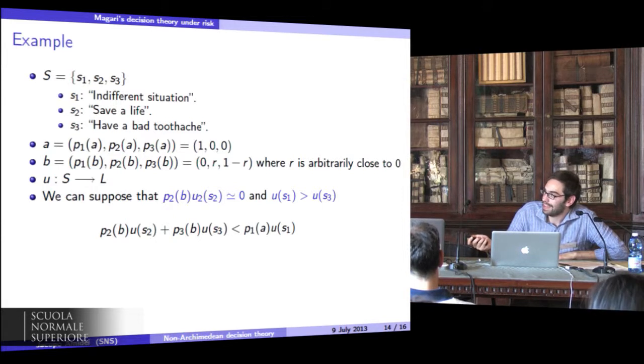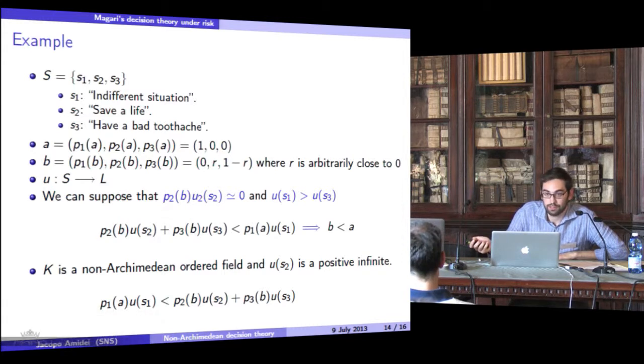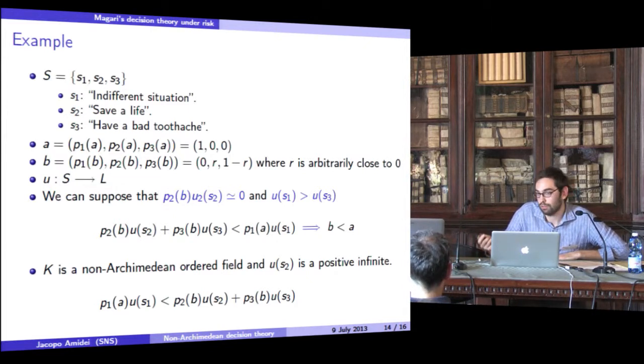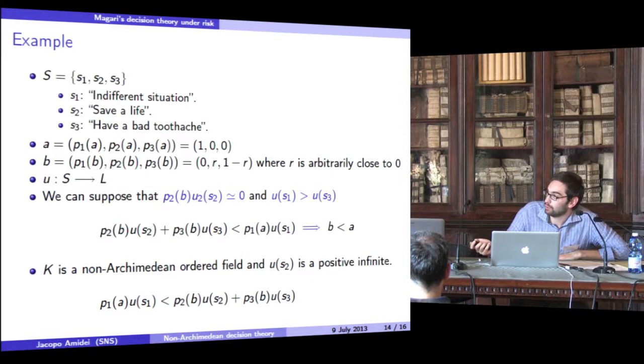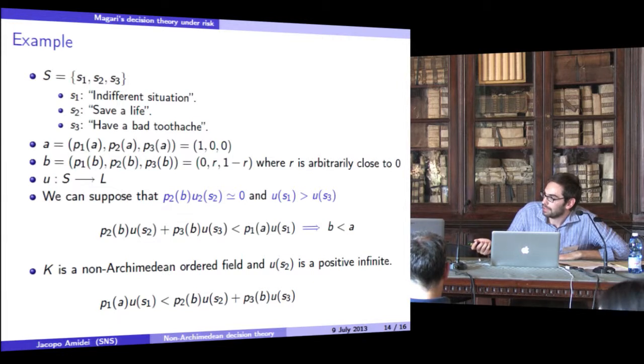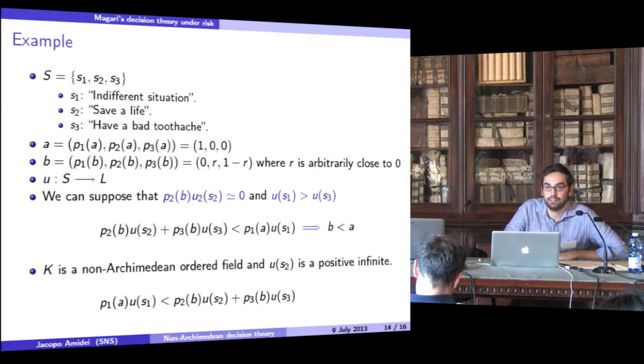Ora, evidentemente lavorare con la probabilità è qualcosa di più complicato, anche perché è una funzione più complicata di quella dell'utilità. In qualche modo l'utilità ci basta un ordine. E quindi lui quello che fa è definire, come ho fatto vedere nell'esempio, cioè di utilizzare il campo non-Archimedeo solo per la funzione di utilità. E per quanto riguarda la probabilità, lui nelle conclusioni dice che è un argomento interessante da sviluppare, perché poi lui purtroppo non ha sviluppato molto questa teoria. Cioè ha lavorato in fondo agli anni Ottanta, poi è morto e quindi non ha continuato molto. Però vedeva molto interessante sia la possibilità di continuare questo tipo di teoria, che la possibilità di lavorare con probabilità che hanno come codominio campi non-Archimedei.